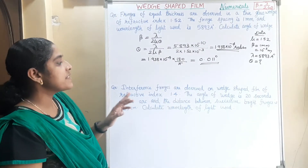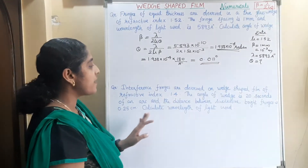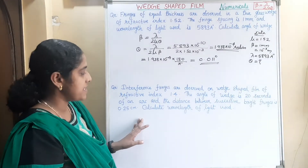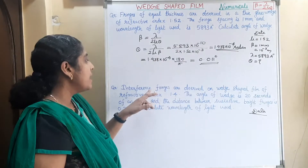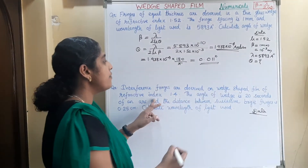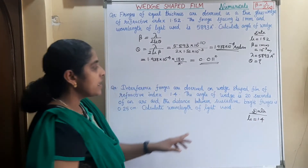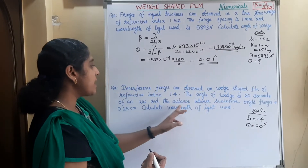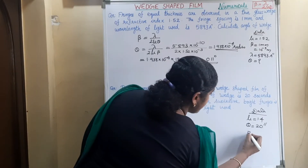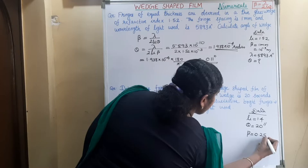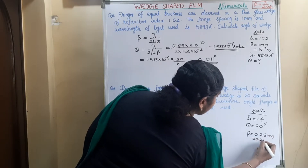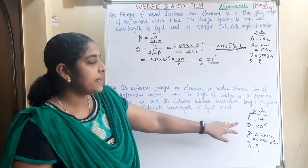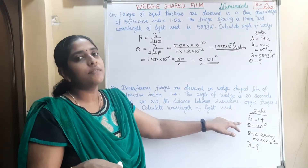Second question: interference fringes are observed on a wedge shape film of refractive index 1.4. The angle of wedge is 20 seconds of an arc and the distance between successive bright fringes is 0.25 centimeter. Calculate wavelength of light used. So mu is equal to 1.4, theta is equal to 20 seconds of an arc, and fringe width beta is equal to 0.25 into 10 raise to minus 2 meter. We have to find out lambda. The angle is given in seconds, so we have to convert into degree.